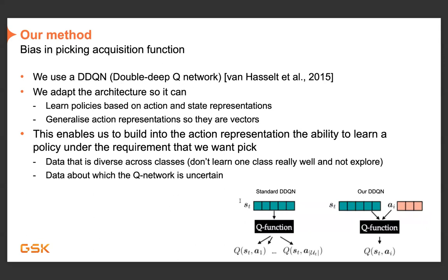Once you've established that you can use an MDP and therefore reinforcement learning, the question is what method to use. We use something called a DDQN — a Double Deep Q-Network — an off-policy reinforcement learning method appropriate for this task. In reinforcement learning, it's like a video game: you have an agent existing in an environment — think of Mario jumping around — picking actions to optimize a reward.